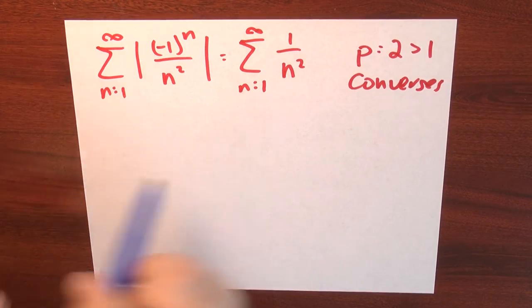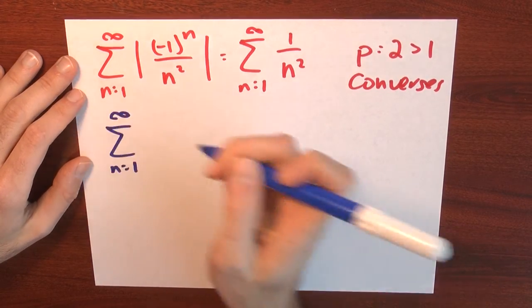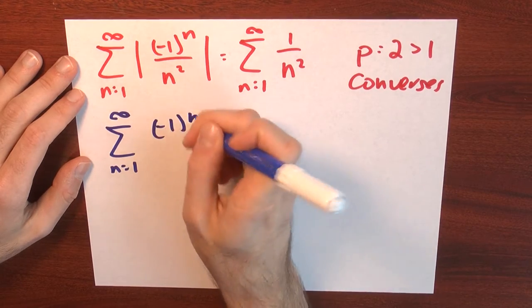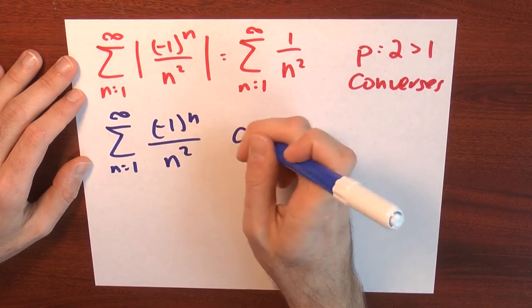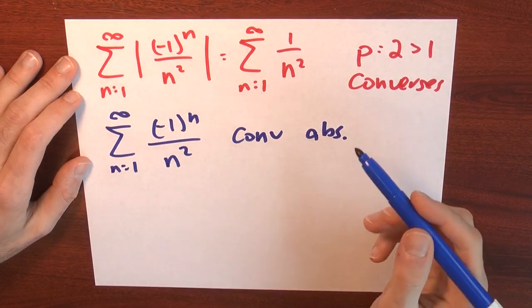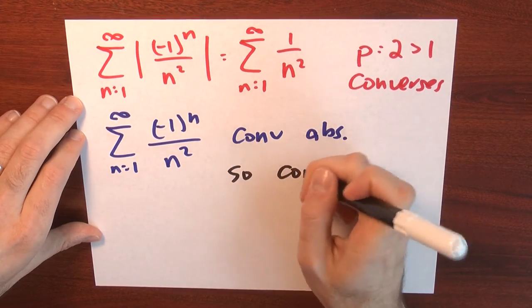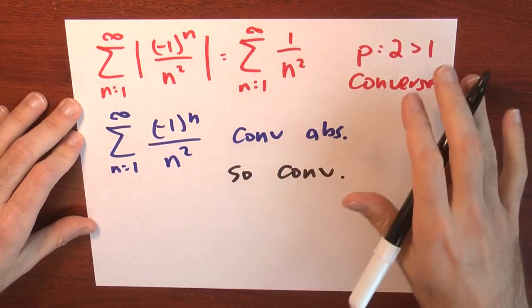Now, what does that mean then about the original series I care about? That means that the sum n goes from 1 to infinity of minus 1 to the n over n squared converges absolutely, because the sum of the absolute values converges. And consequently, by the theorem, it just plain old converges.